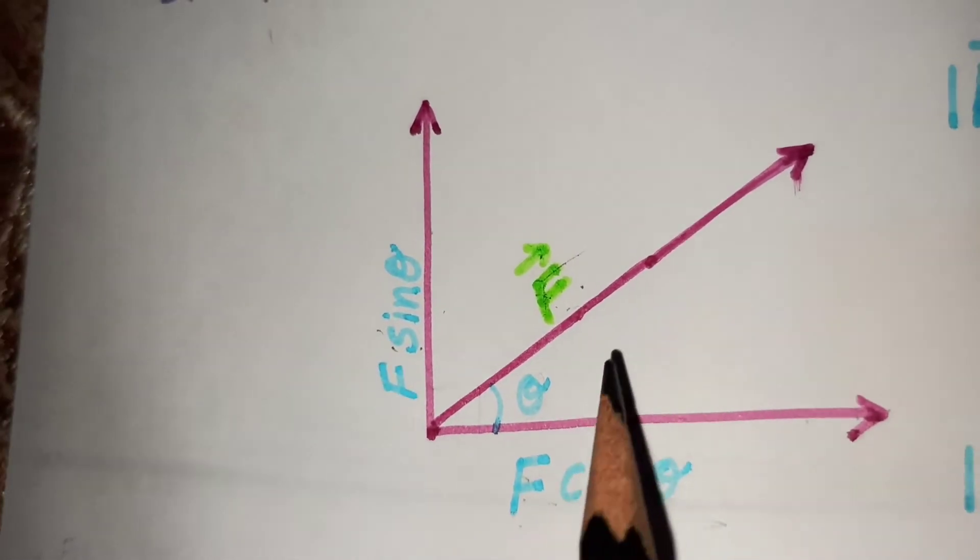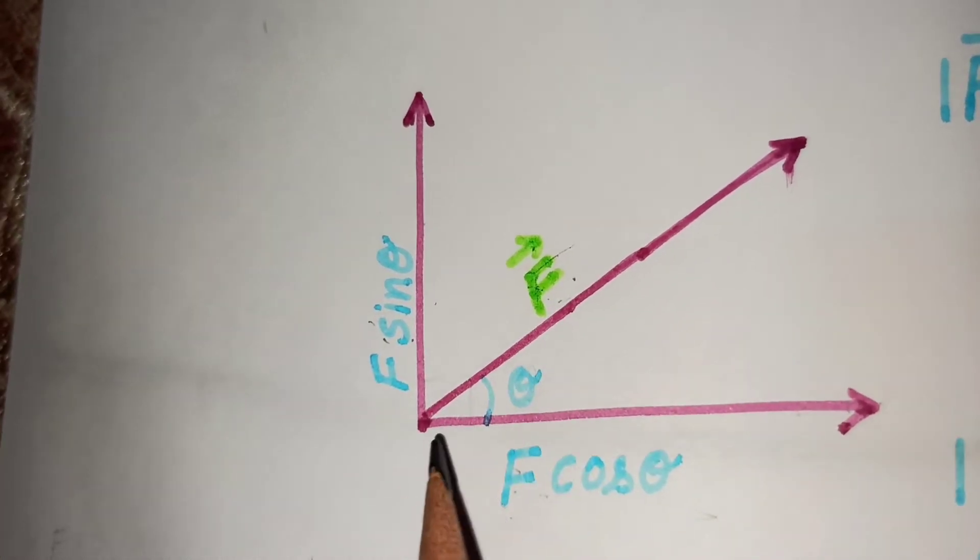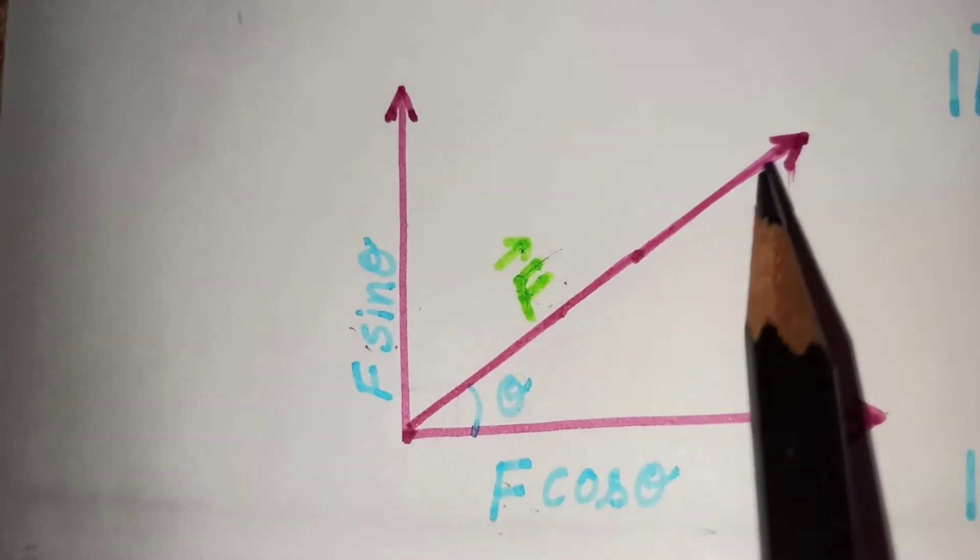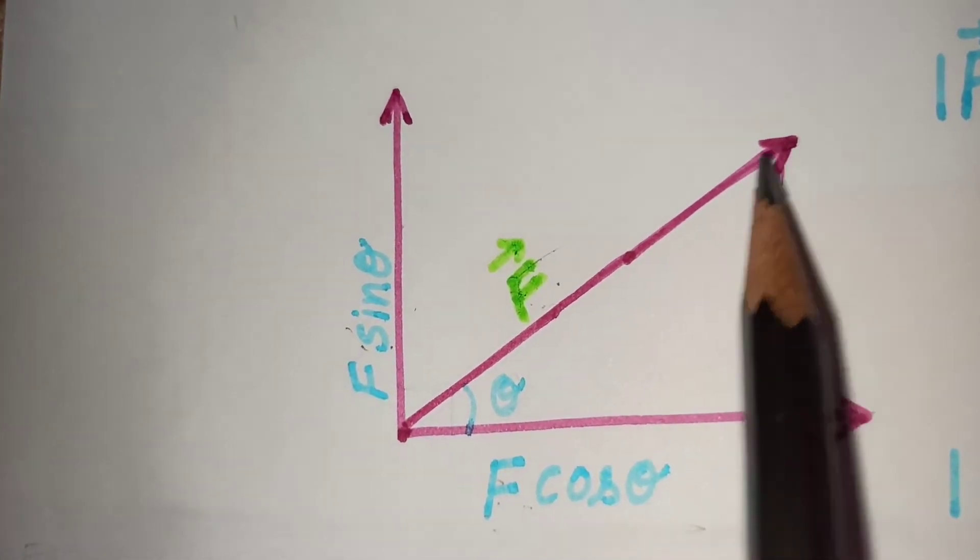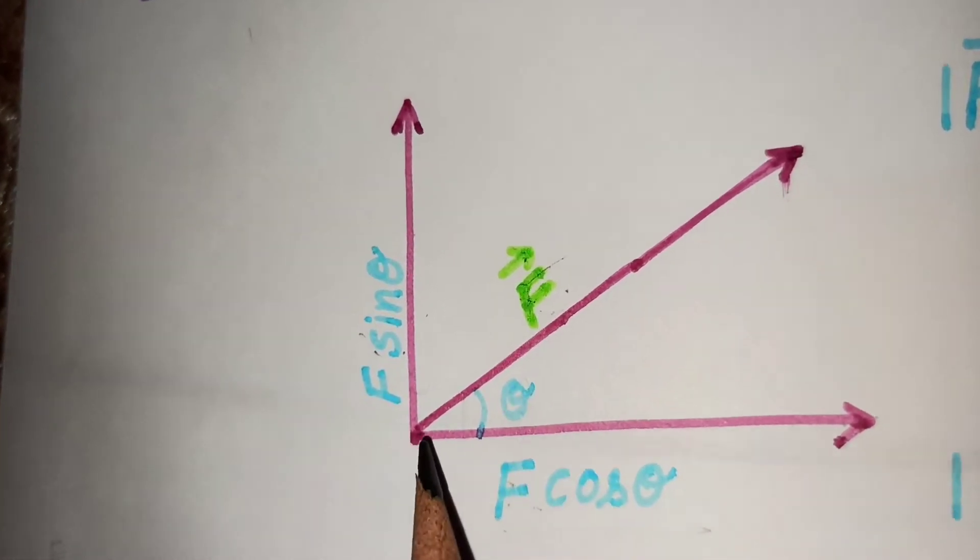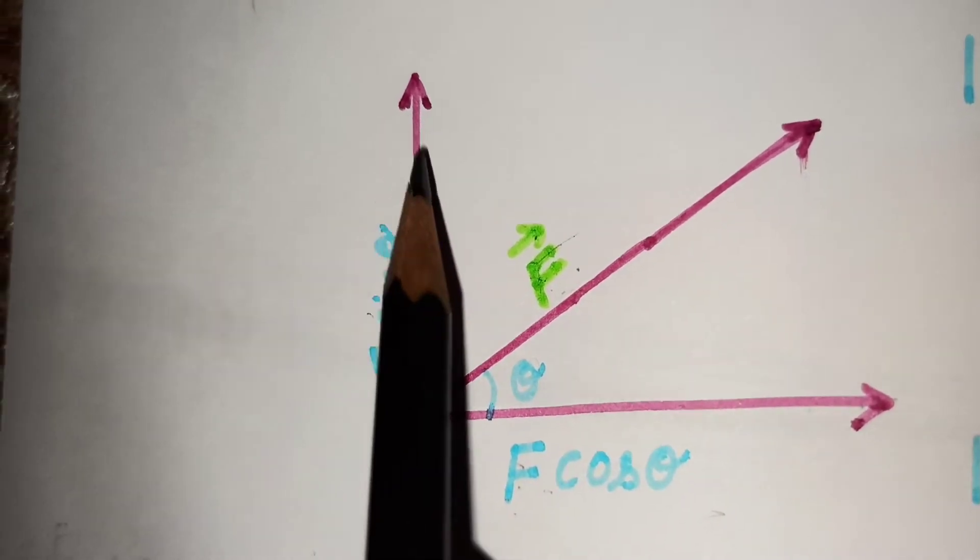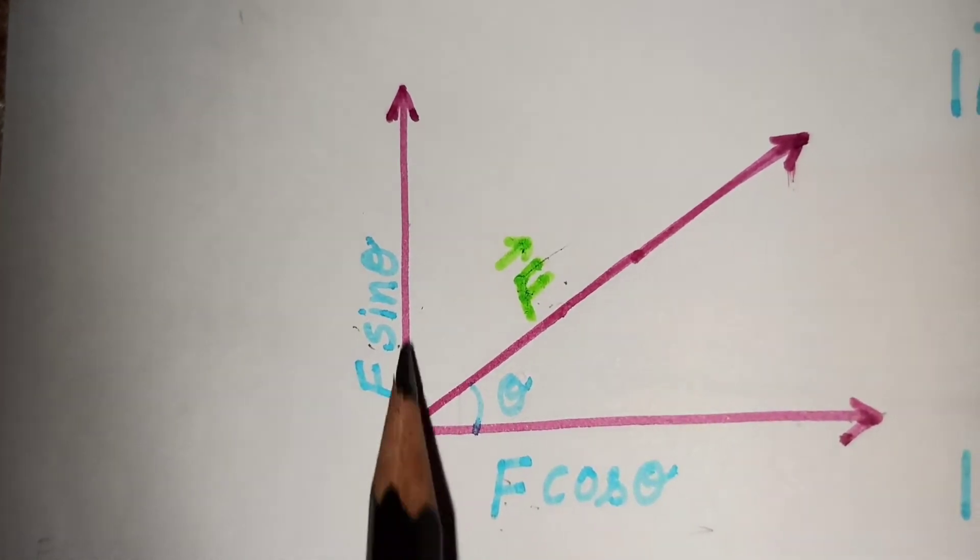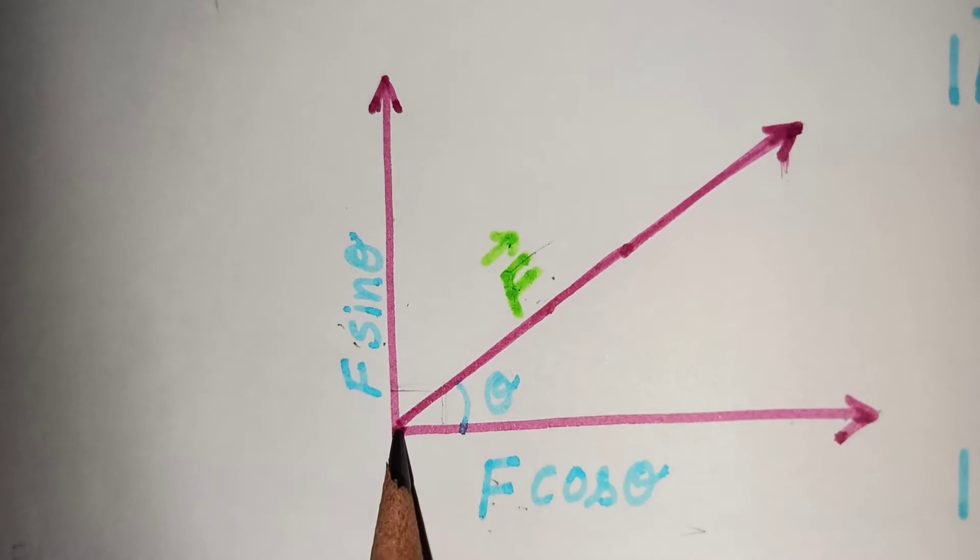Let us see the components of this vector f. Let f be any vector acting in any direction. To find the component of vector f, we will draw the horizontal and vertical line such that both lines are perpendicular on each other.